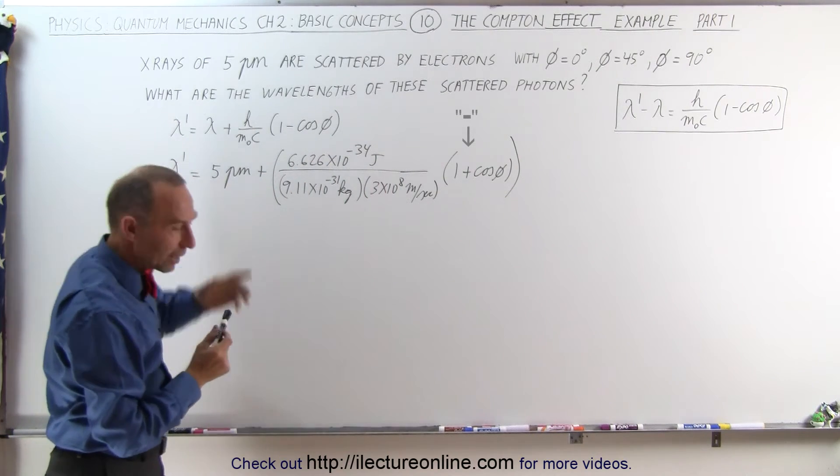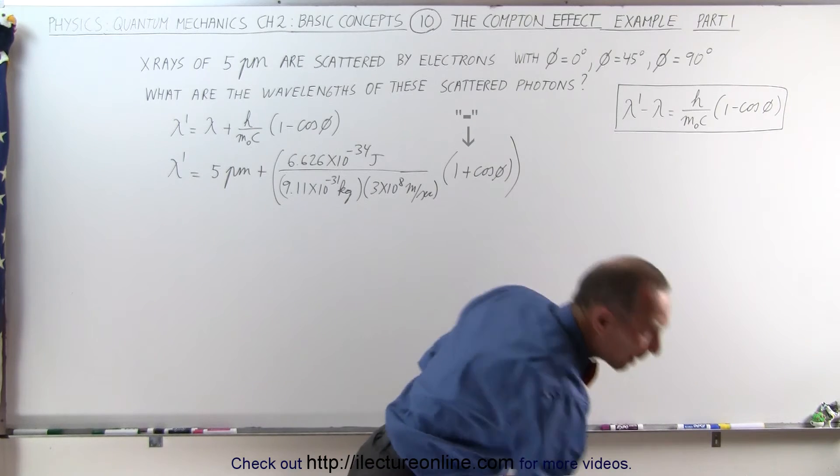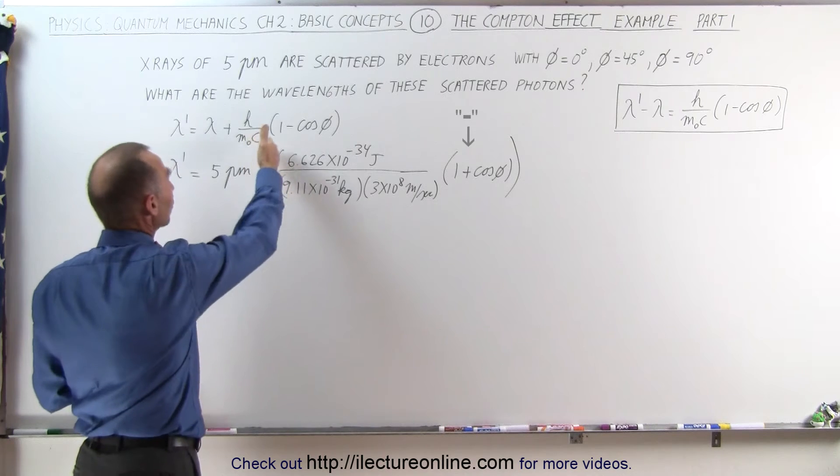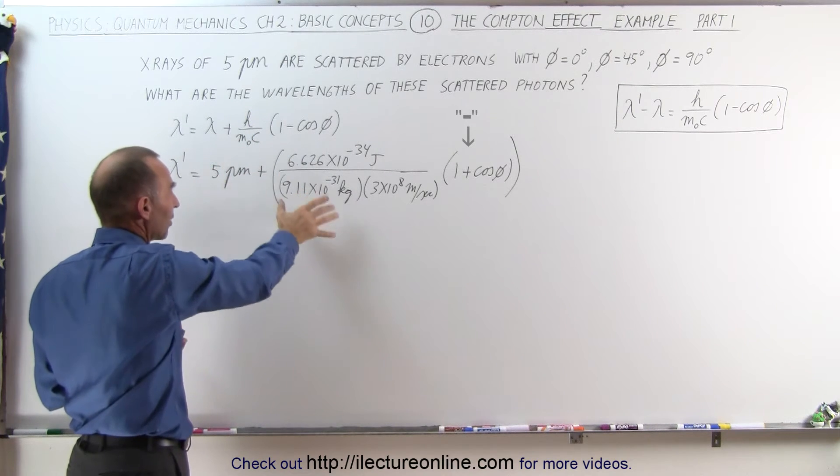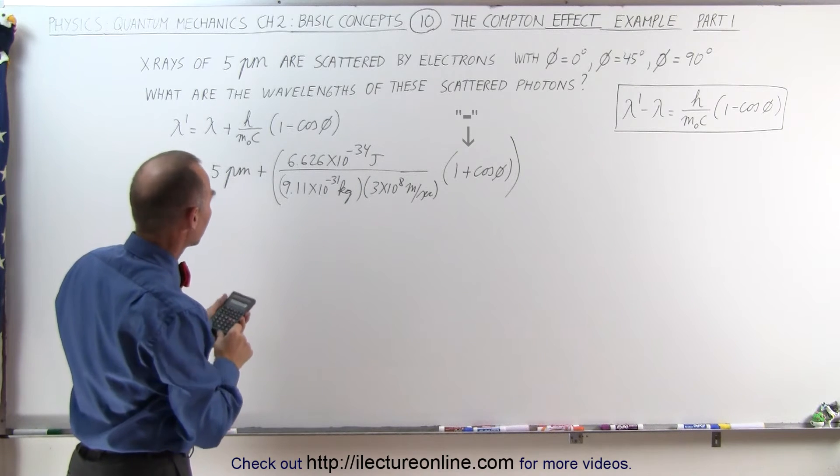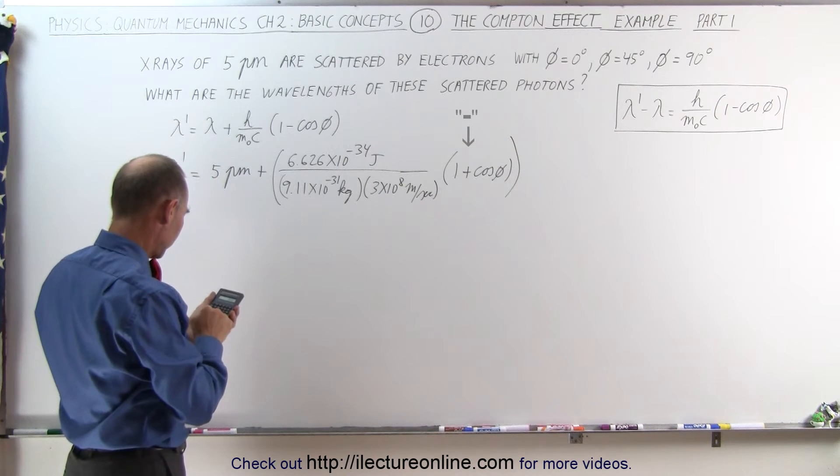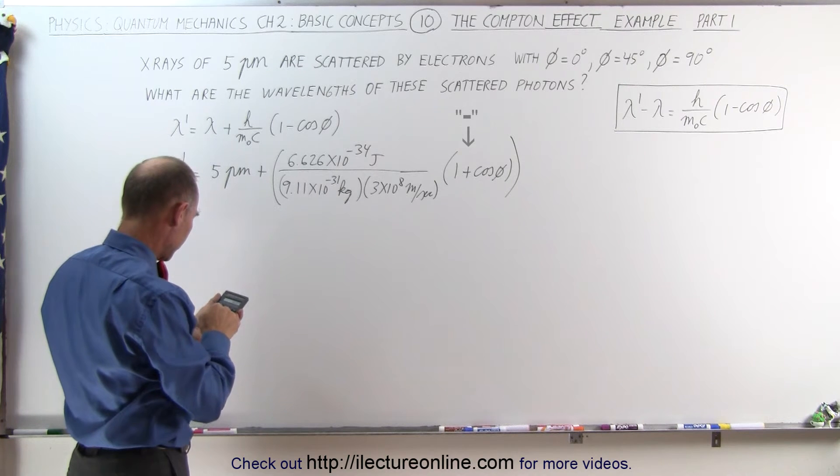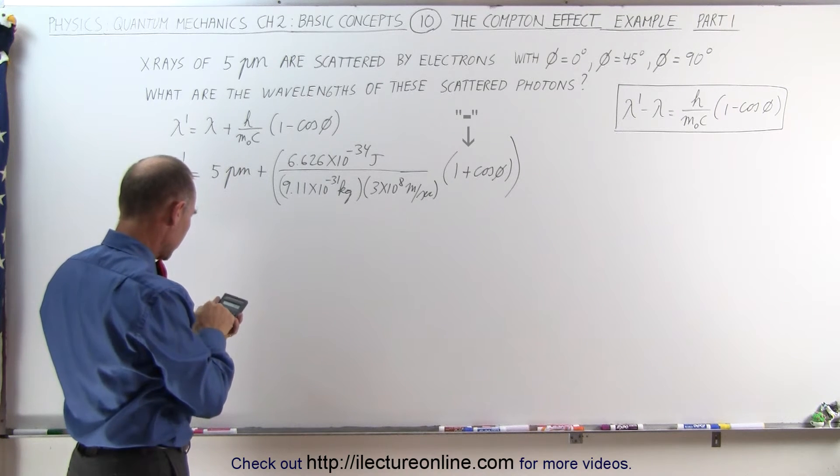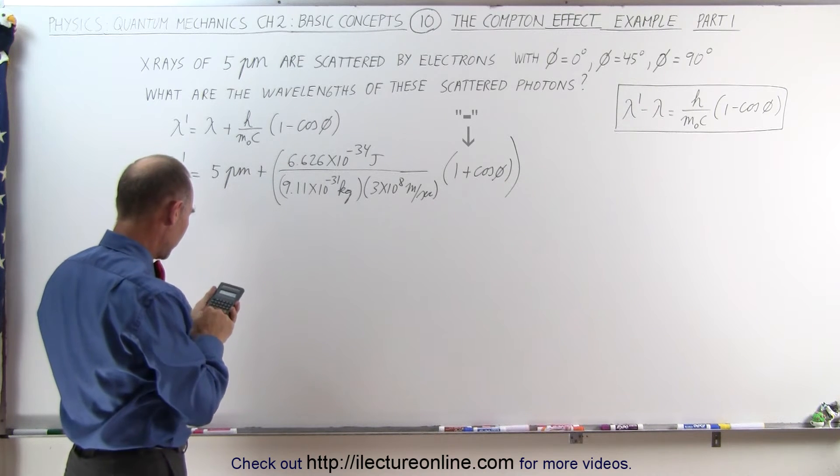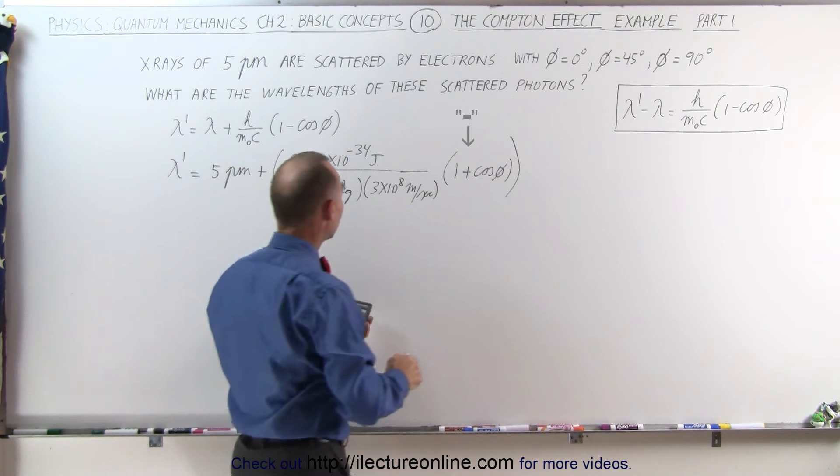Let's work that out and see what we get. By now that should become a very familiar number because it's always going to be scattering off electrons, that's a typical situation. Always going to have the same quantity right here, so this becomes 6.626 times 10 to the minus 34 divided by the mass of an electron and divided by the speed of light.